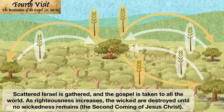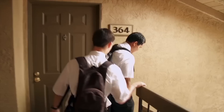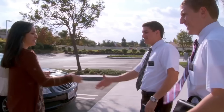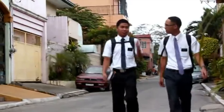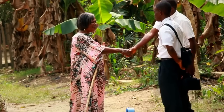Pluck not the wild branches from the trees, save it be those which are most bitter, and in them ye shall graft according to that which I have said. And this I do, that perhaps the roots thereof may take strength because of their goodness, and because of the change of the branches, that the good may overcome the evil. And perhaps that I may rejoice exceedingly that I have preserved the roots and the branches of the first fruit. Wherefore, go to and call servants, that we may labor diligently with our might in the vineyard, that we may prepare the way, that I may bring forth again the natural fruit, which natural fruit is good, and the most precious above all other fruit. Wherefore, let us go and labor with our might this last time, for behold, the end draweth nigh, and this is for the last time that I shall prune my vineyard.